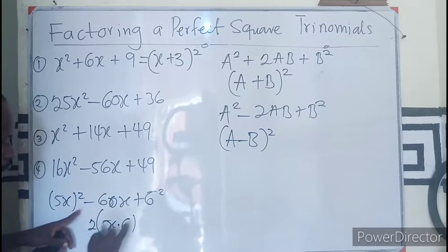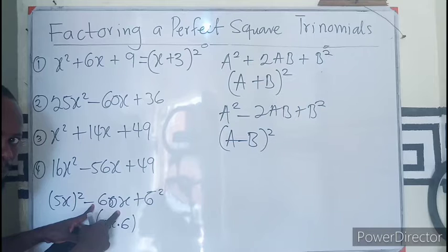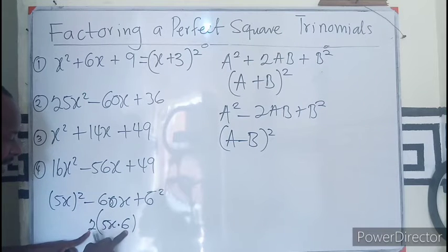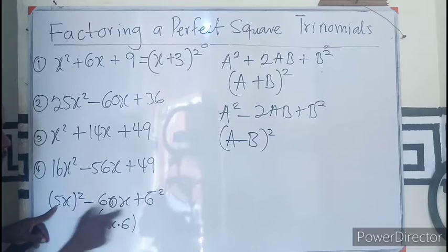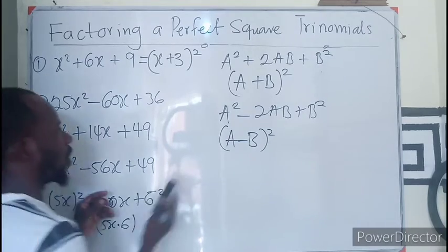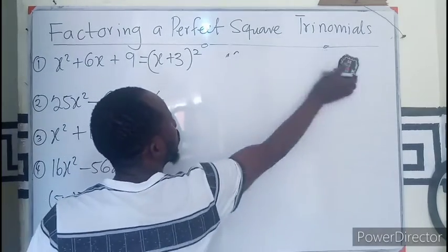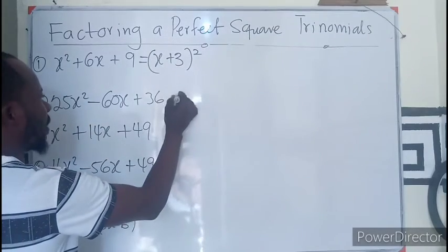If I multiply these two—as in 5x times 6—if I multiply this answer by 2, will I be getting 60? I believe this is 30x times 2 equals 60x. Then I can also call this to be a perfect square trinomial, meaning this is going to be...